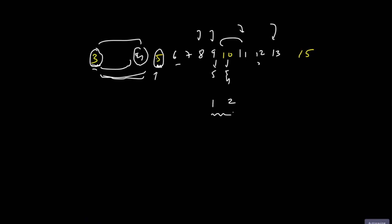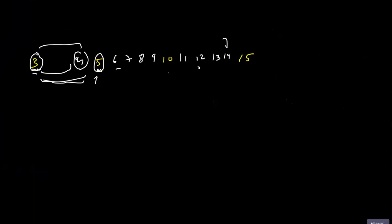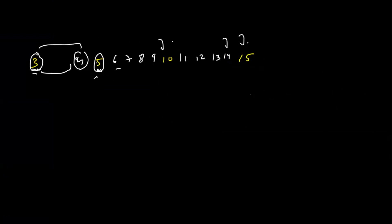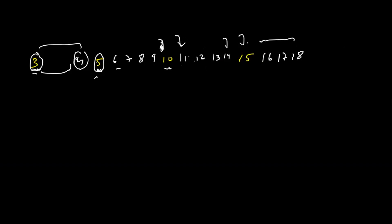At Z=15, Y=10 does not satisfy. We try to move the Y pointer further, but it crosses the boundary — so we break out of the loop, since there is no possible triplet. Similarly if Z were 16, 17, or 18, we don't unnecessarily loop because Y has already exceeded its valid range.